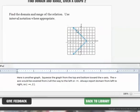Here's another graph. Squeeze the graph from the top and bottom toward the x-axis to find the domain. The x-axis would be covered all the way from 2 all the way to the left of the graph, or to negative infinity. Now we always report the domain from the left to the right, so when we report the domain, we need to start with negative infinity and then go to 2.